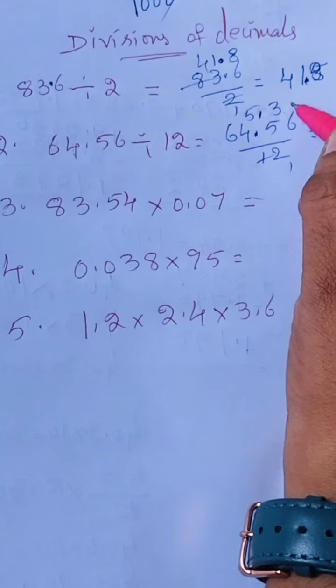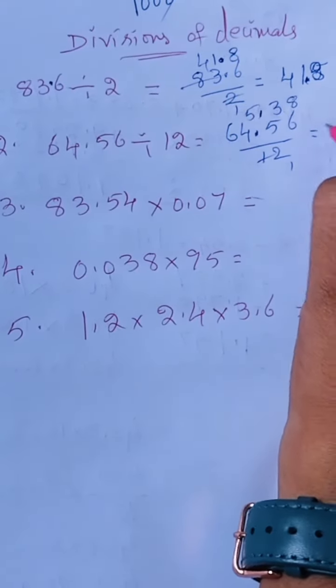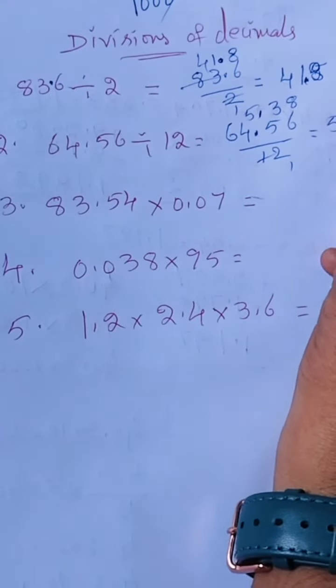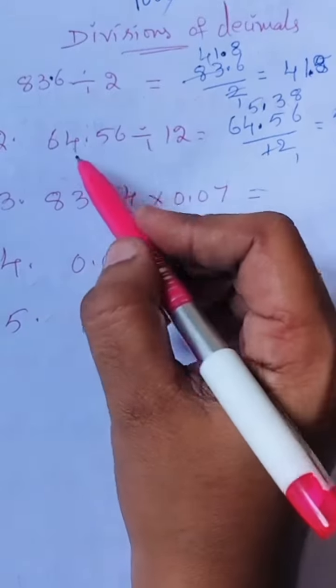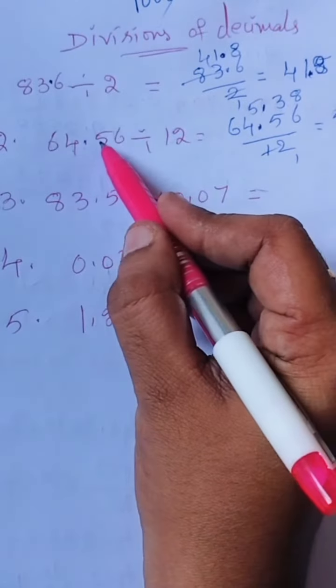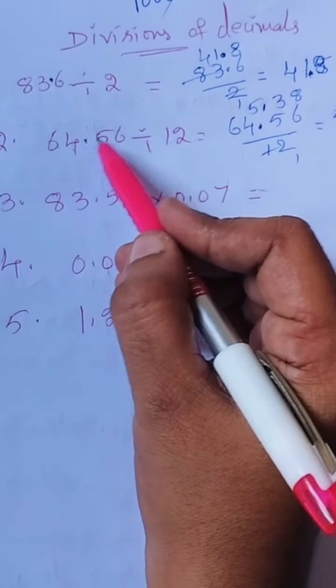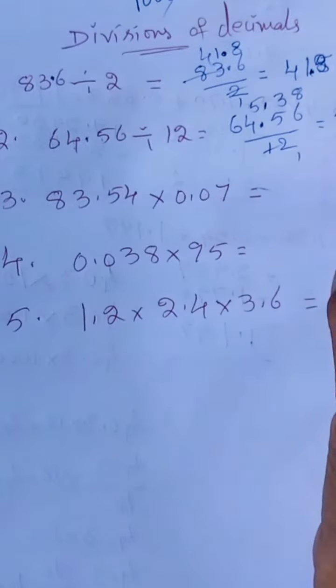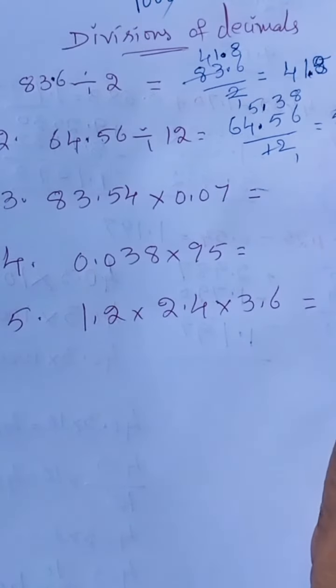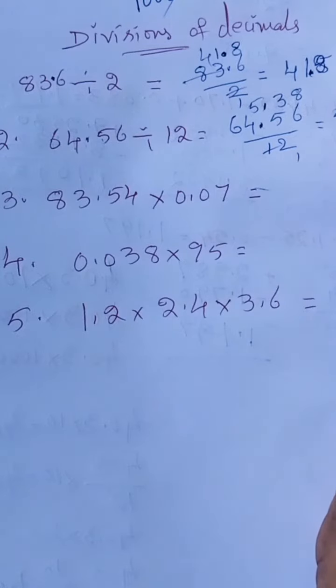Answer equals 5.38. So here in this, the point is before the two numbers, same as in the answer also. The point is two numbers before, we keep the point before the two digits.